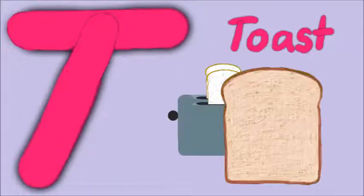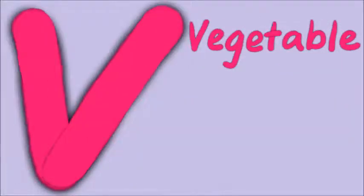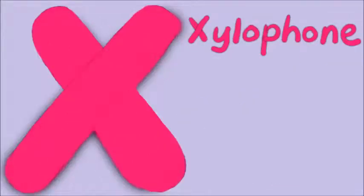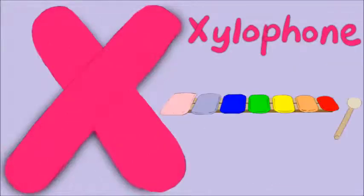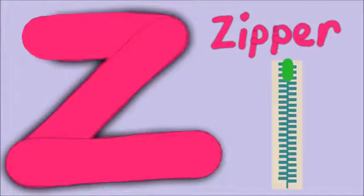T for toast, U for umbrella, V for vegetable, W for water, X for xylophone, Y for yellow, Z for zipper.